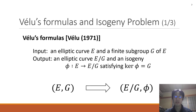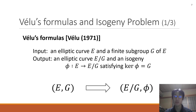We use Vélu's formulas for computing isogenies. From an elliptic curve E and a finite subgroup G of E, it outputs an elliptic curve E/G and an isogeny phi mapping from E to E/G, satisfying that the kernel of phi equals G. This is a very important formula for isogeny-based cryptography.